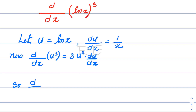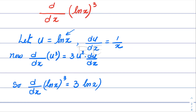So, the derivative of (ln x) cubed, which is u, will be 3 times (ln x) squared, times du/dx, and du/dx is 1 over x.